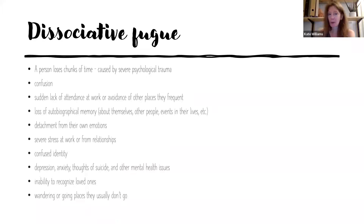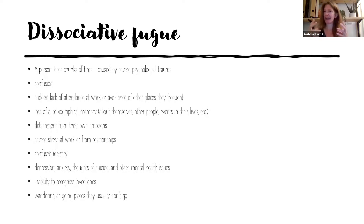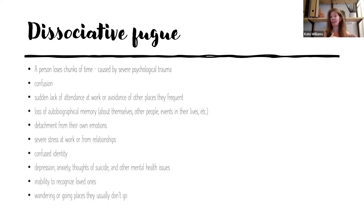Dissociative fugue is when a person loses chunks of time, often caused by severe psychological trauma. There might be sudden lack of attendance at work, avoidance of frequently visited places, loss of memories about themselves and events, and detachment from emotion. On a minor scale, we might experience this as suddenly realizing five minutes has gone while zoning out. On the other end of the spectrum, somebody can really lose big chunks of time.